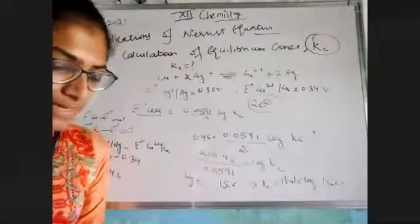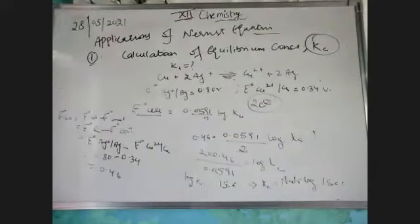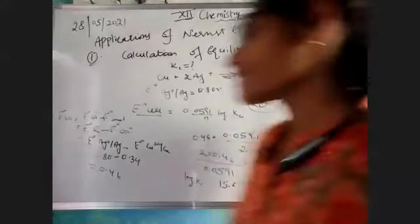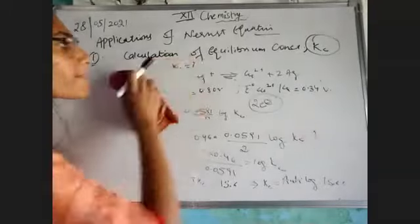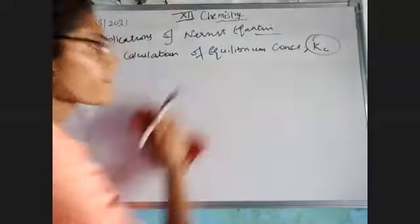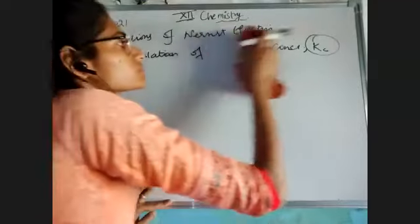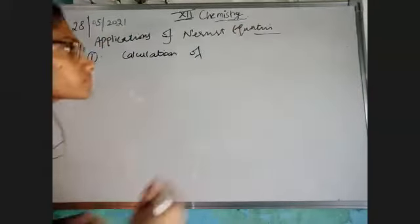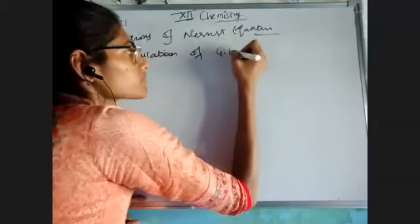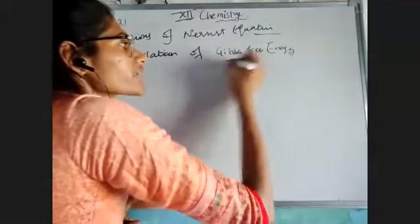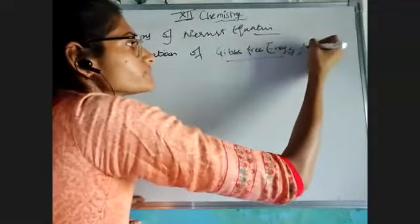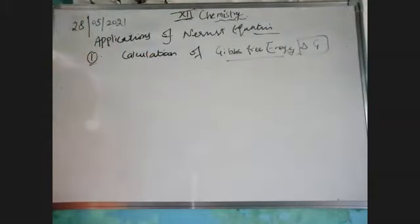Alright. So we have done the first application. Now let's move to the second application, which is known as Gibbs free energy. We have calculated the equilibrium constant; now let's see how to calculate the Gibbs free energy. This Gibbs free energy is denoted by ΔG — delta G means change in Gibbs free energy.